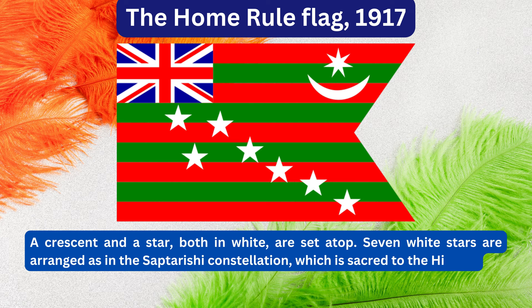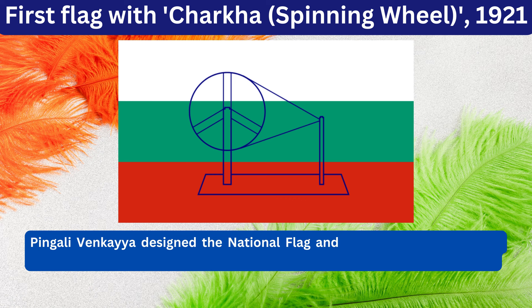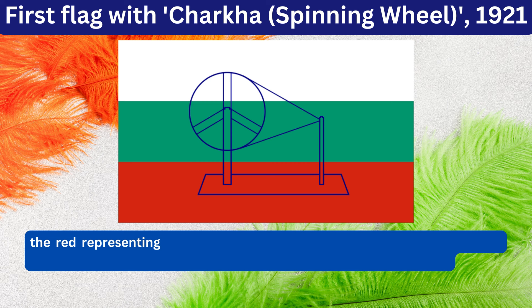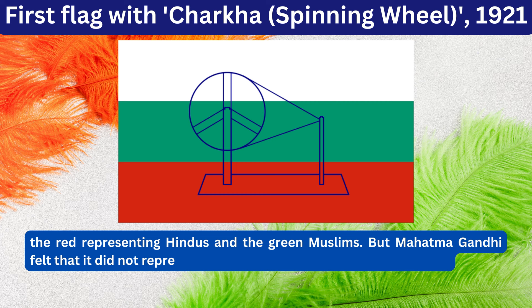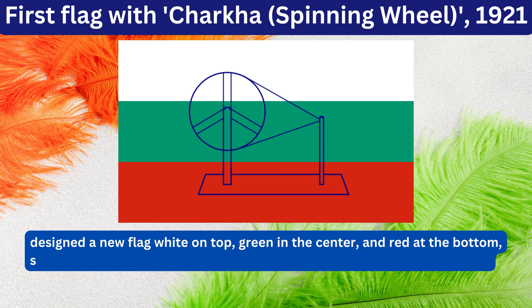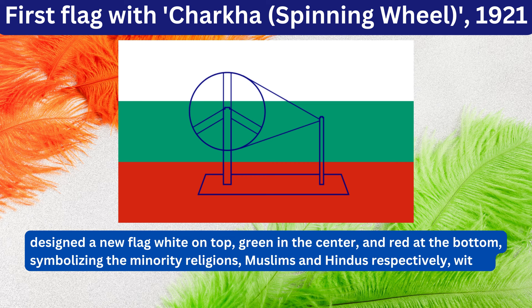Pinkali Venkaya designed the national flag and presented it to Mahatma Gandhi on 1st April 1921. Venkaya's first draft of the flag was in red and green, the red representing Hindus and the green Muslims. But Mahatma Gandhi felt that it did not represent all of the religions in India, so Venkaya designed a new flag with white on top, green in the centre and red at the bottom, symbolising the minority religions, Muslims and Hindus respectively, with a spinning wheel drawn across all three bands.